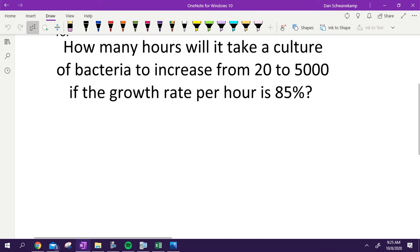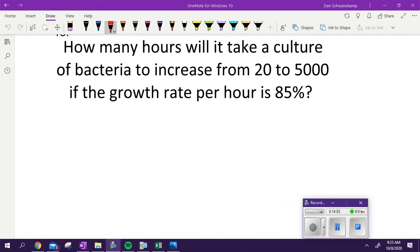How many hours will it take a culture of bacteria to increase from 20 to 5000 if the growth rate is 85%? Two formulas you need to have memorized for tomorrow: Y equals A e^(kt), which is the same thing as Pe^(rt). That's one formula you need to know. And then the A equals P times (1 plus r over n)^(nt), the financial formula. Which formula are we dealing with here if we're talking about population growth?